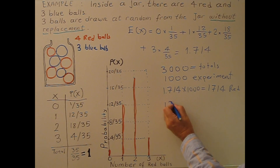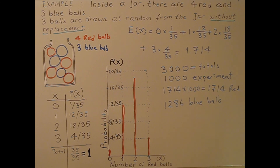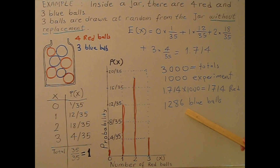If we subtract 1714 from 3000, we get approximately 1286 blue balls. This is the expected number. We might be off by maybe 12 balls more or less, but this is the long-run average. Since there are 4 red and 3 blue balls out of 7 total, red balls outnumber blue, so getting around 1700 red and 1286 blue looks reasonable.